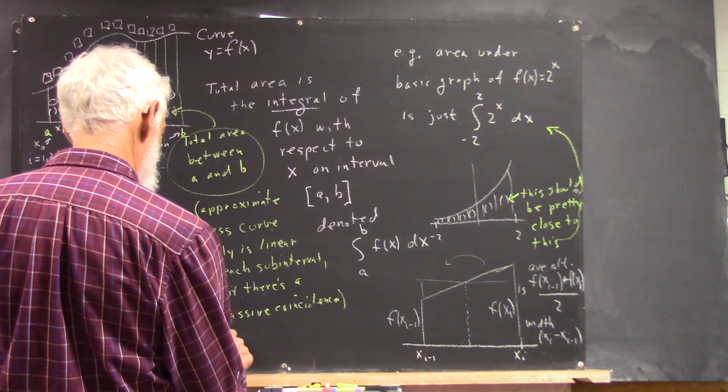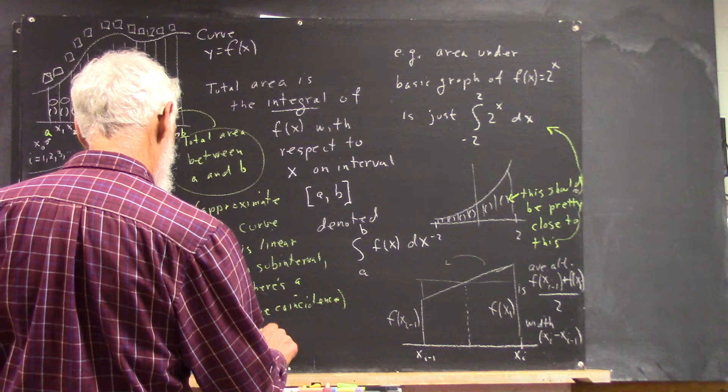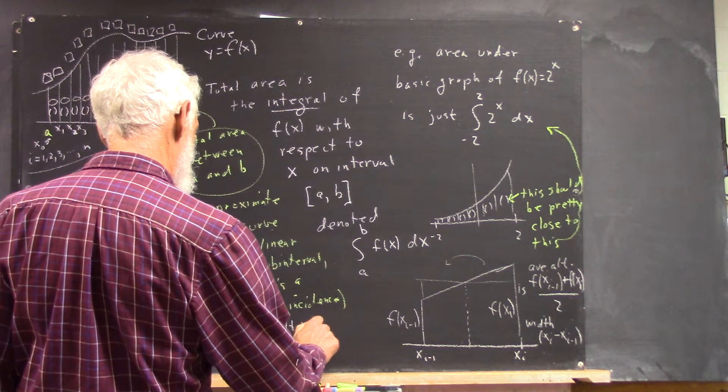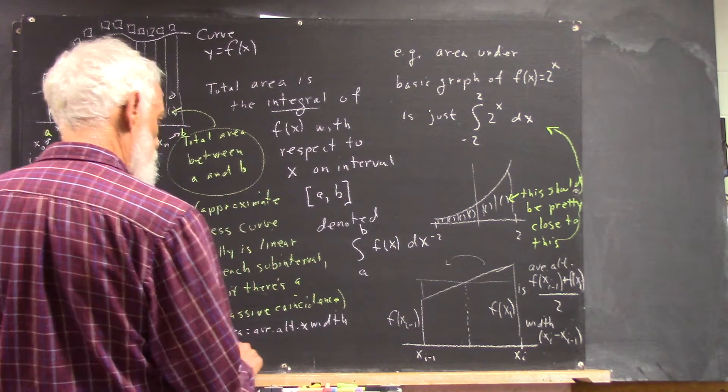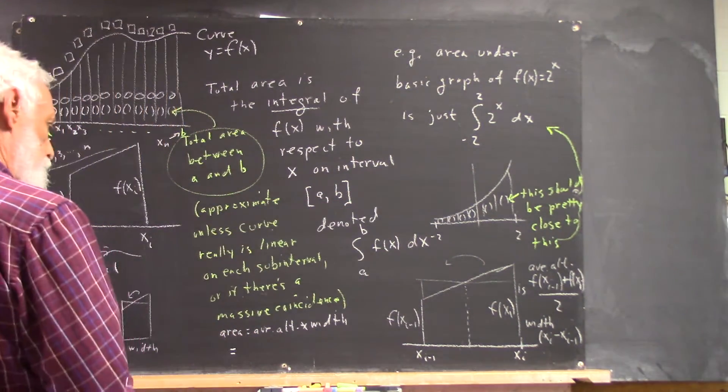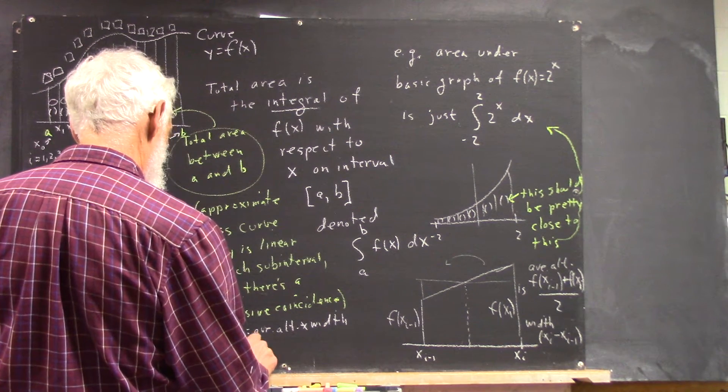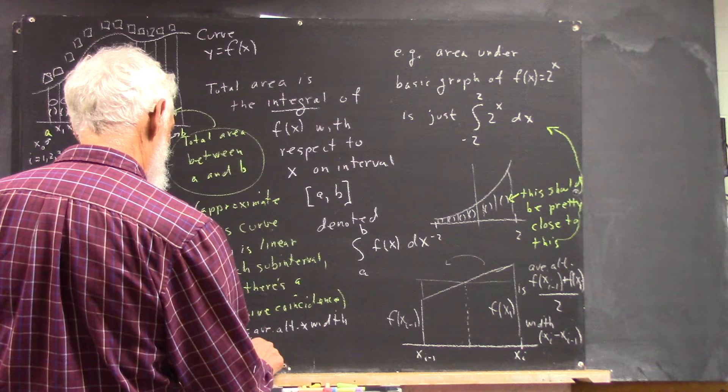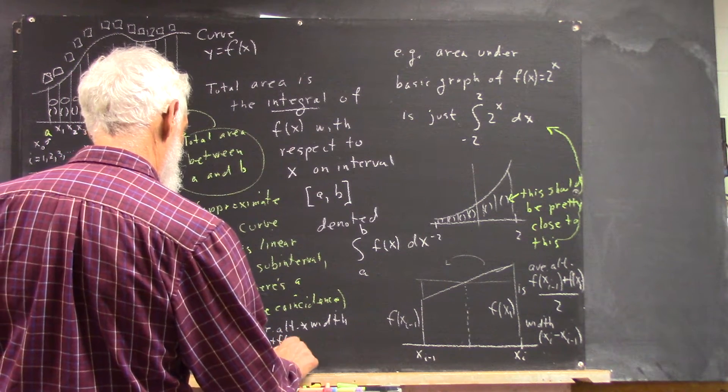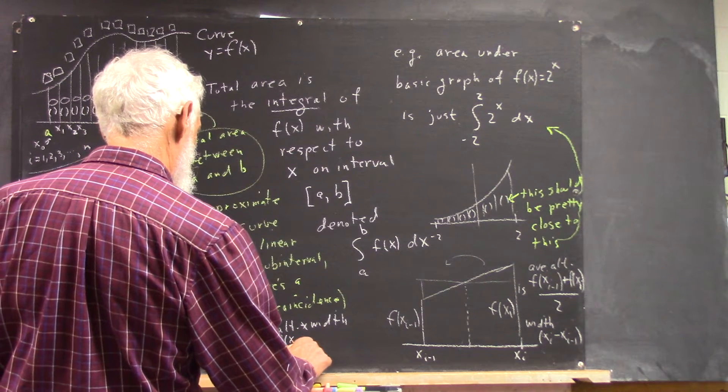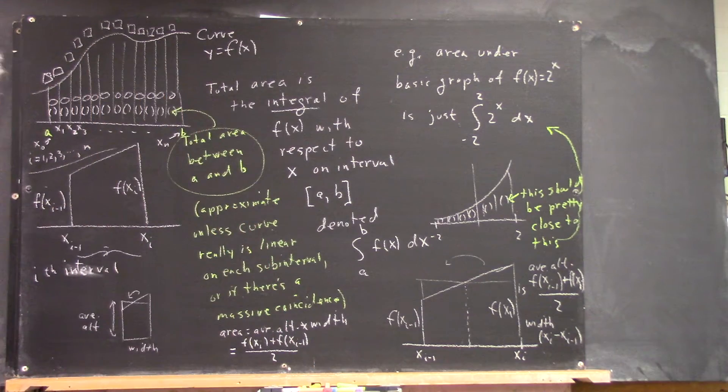So, and since I'm not squeezed by the board, I think I can write this out in the space I've got. It's f of xi plus f of xi minus one over two. Okay?